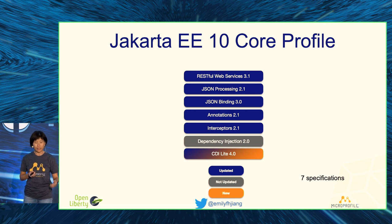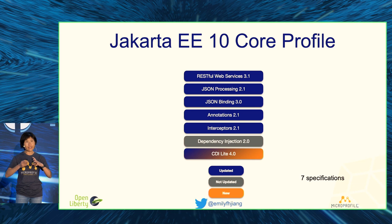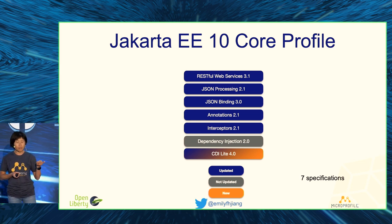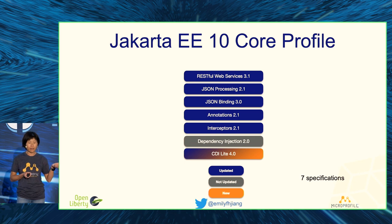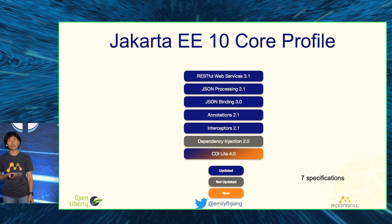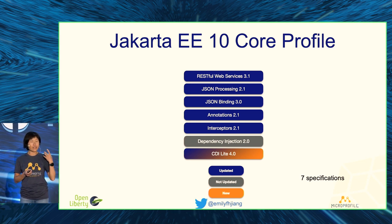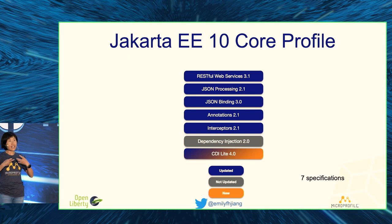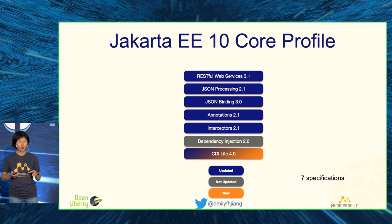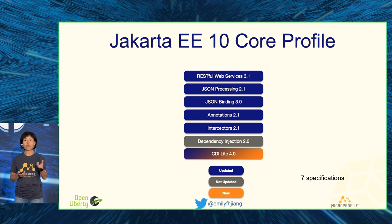For the Jakarta EE core profile there are about seven specifications: CDI, interceptor annotations, JSONB, JSONP, and Jakarta REST. Who knows about CDI? Who knows about Spring, Spring Boot? CDI is similar to Spring's dependency injection — if you do @Inject, it's similar to @Autowired. CDI Lite is a new part in the CDI specification lifted to be added to the Jakarta EE 10 core profile. MicroProfile consumes the whole Jakarta EE 10 core profile.